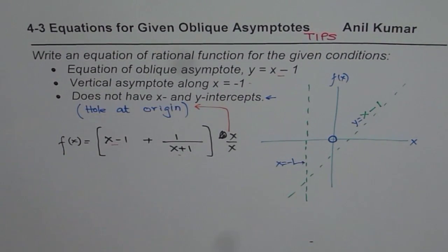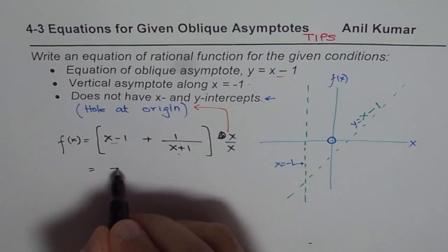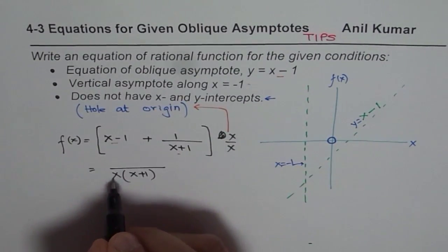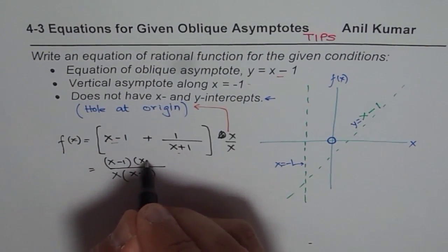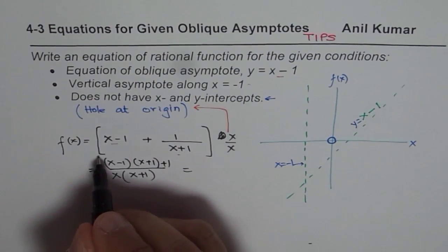So that is how you get your answer. I hope that is absolutely clear. Now we can actually simplify this. Let's take common denominator of x + 1 and we do have times x in the denominator. When you multiply, let me write (x - 1)(x + 1) + 1, this could be written as,